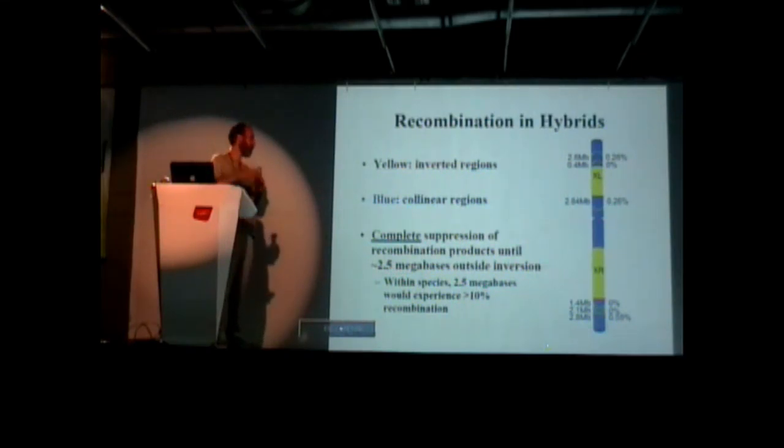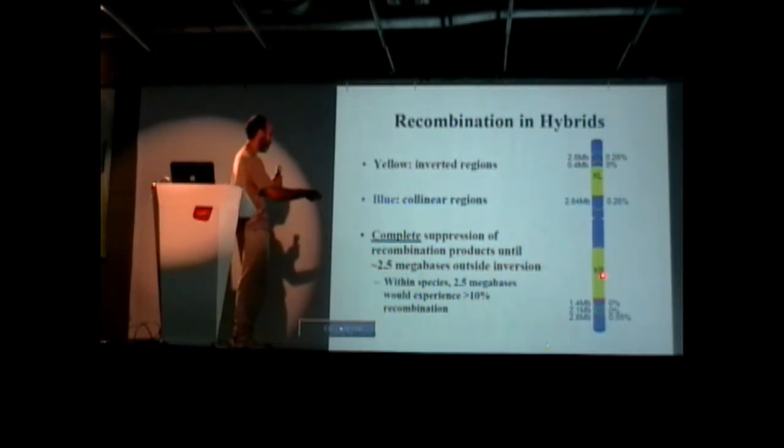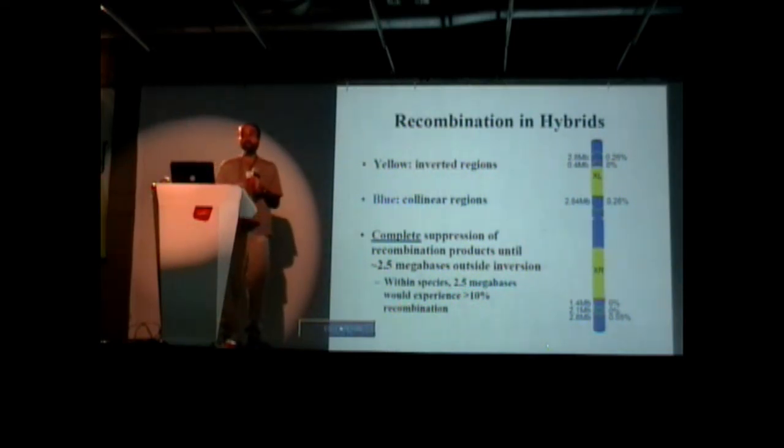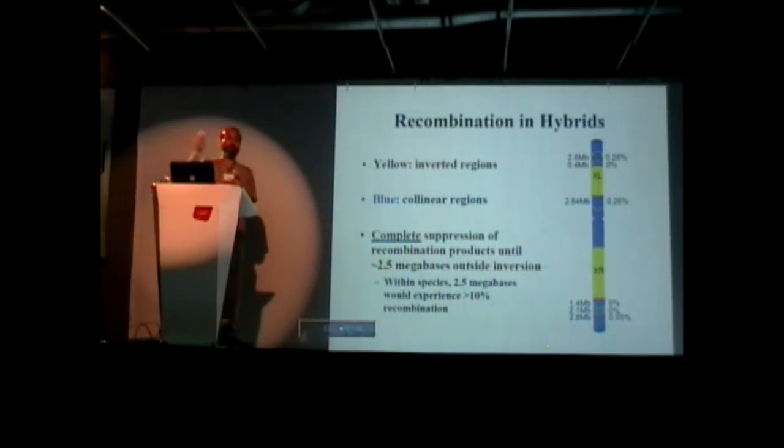So you see here, going from this inverted region, at a marker of 1.4 megabases, zero recombination. 2.1 megabases, zero recombination. And only at 2.8 do you have small amounts of recombination. This piece, 2.5 million bases, within species will experience more than 10% recombination. So this is really different in the hybrids than in the normal species.